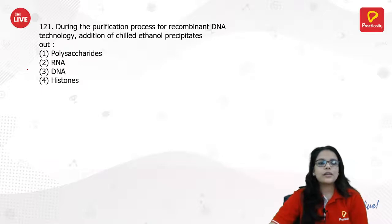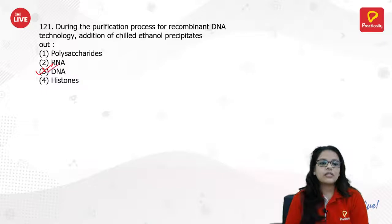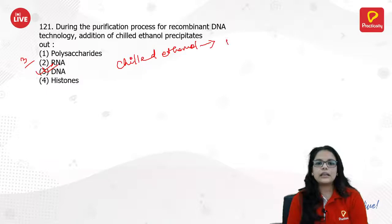During the purification process of recombinant DNA technology, addition of chilled ethanol — this is directly copied from a previous year paper, I think 2019. The answer is DNA: chilled ethanol is used for DNA precipitation.